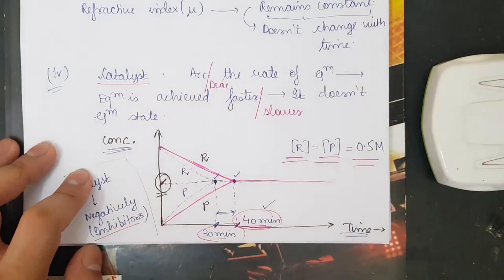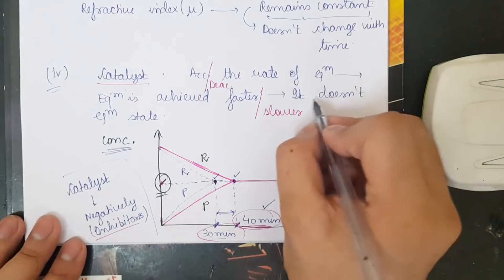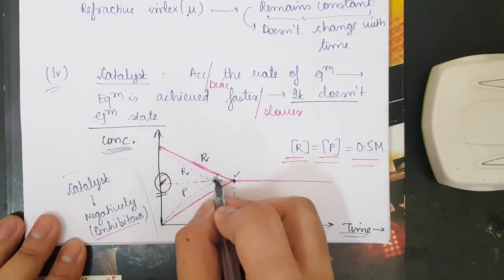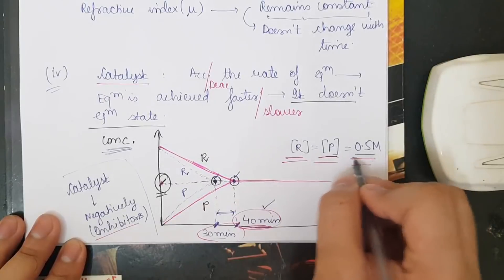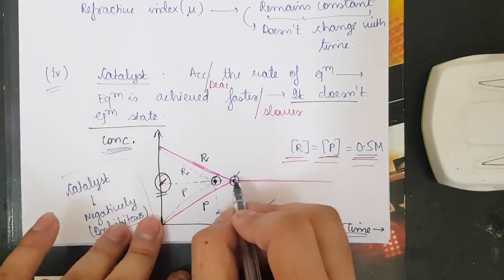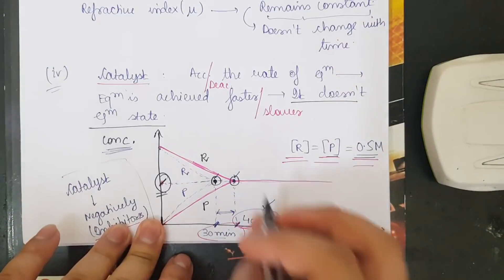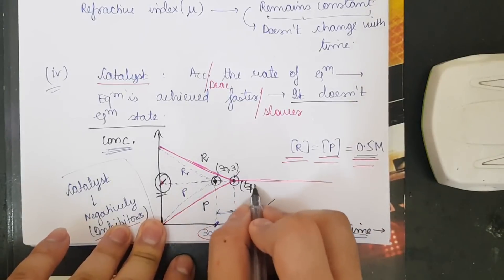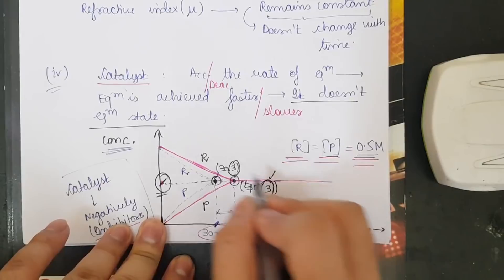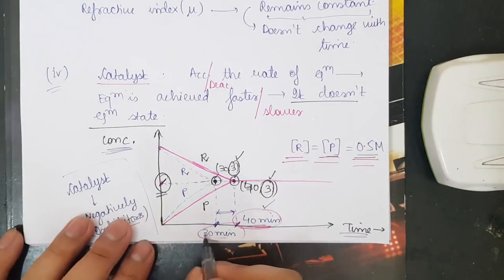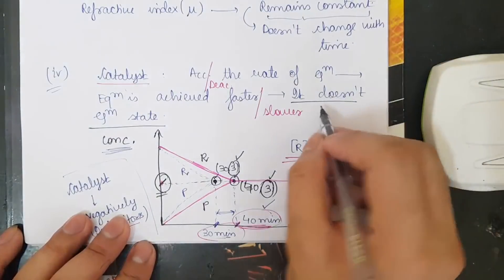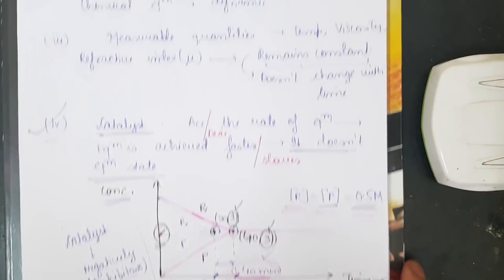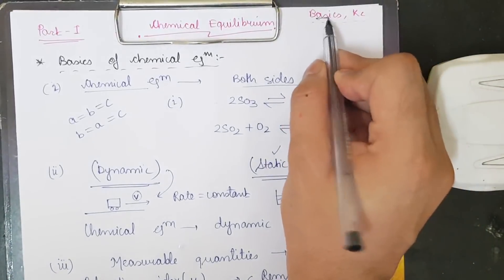The key takeaway is that even though equilibrium is reached at different times, if you project both equilibrium points onto the Y-axis, the concentration value is the same — say 0.5 molar. For example, one point is (30, 3) and the other is (40, 3), so the Y-coordinate is the same. Adding a catalyst does not change the equilibrium state.